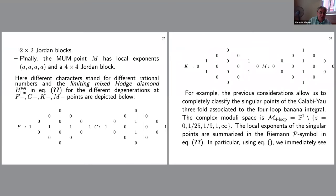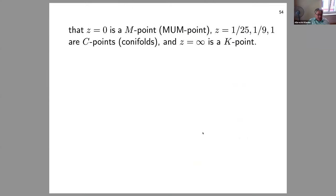For Calabi-Yau threefolds in the Almkvist-Enckevoort-van Straten-Zudilin classification, the SL(2,Z) orbit theorem shows only three types of degeneration are possible: a conifold point (related to local exponents), a K point with two-by-two Jordan blocks, and a MUM (maximal unipotent monodromy) point with a four-by-four Jordan block. The banana graph has all these singularities: a K point in the infrared, a MUM point and K point in the ultraviolet. This is very useful for characterizing how general Feynman graphs can be categorized.